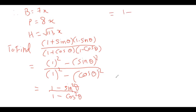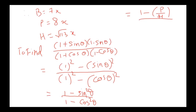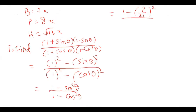First, the formulas. Sine θ — I associate sin with 'pop', meaning P upon H. Cos — I associate cos with 'ball', meaning B upon H. Now I'll substitute these squared values into the expression.